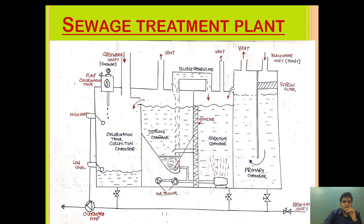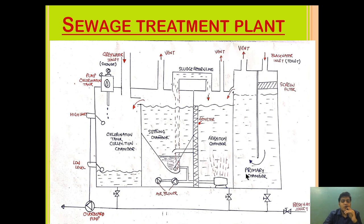Grey water — the water used for bathing — comes directly into the chlorination chamber, not the primary chamber, because this water doesn't contain bacteria and only needs disinfection. Additionally, from time to time the sewage treatment plant must be flushed with fresh water so that any sewage clinging to the surfaces of the plant walls is cleaned off and pumped out by the overboard pump.